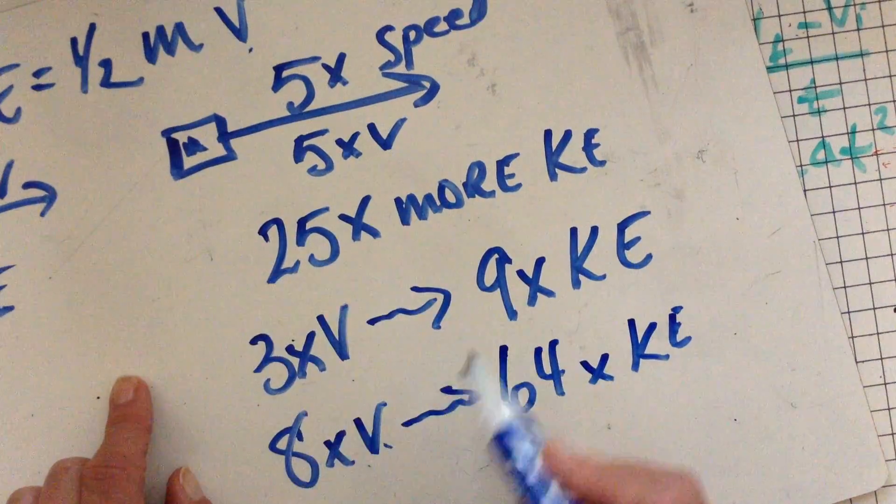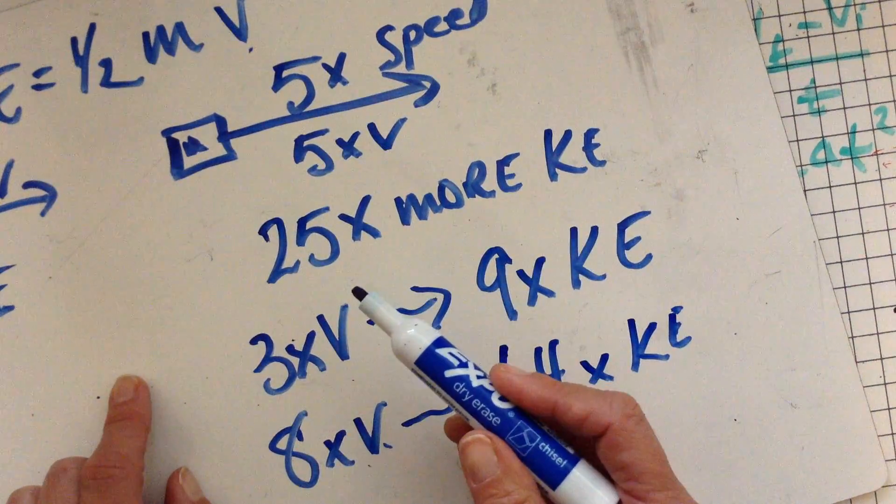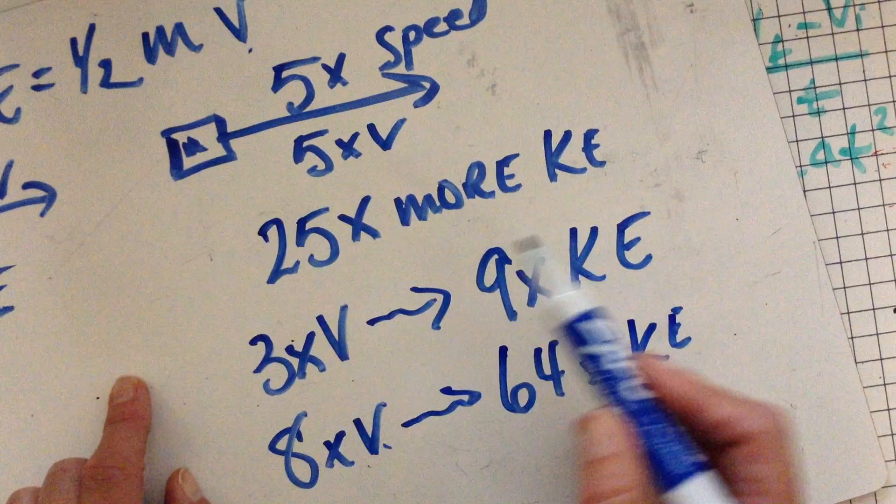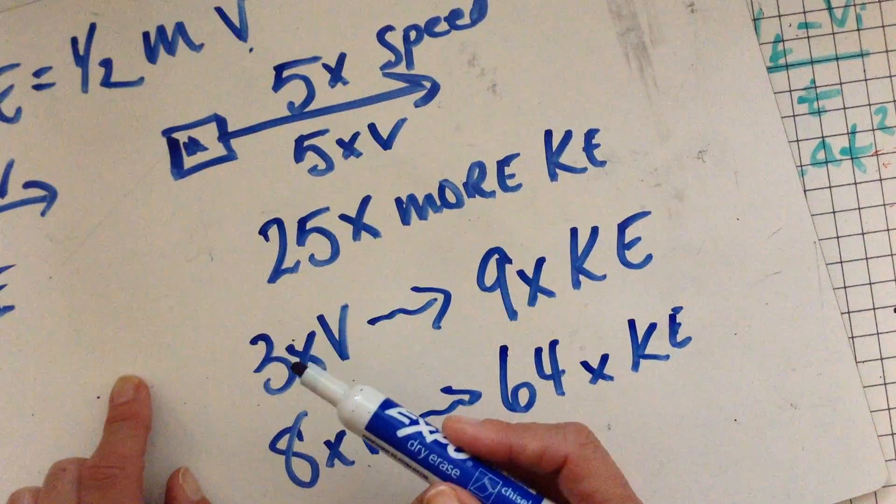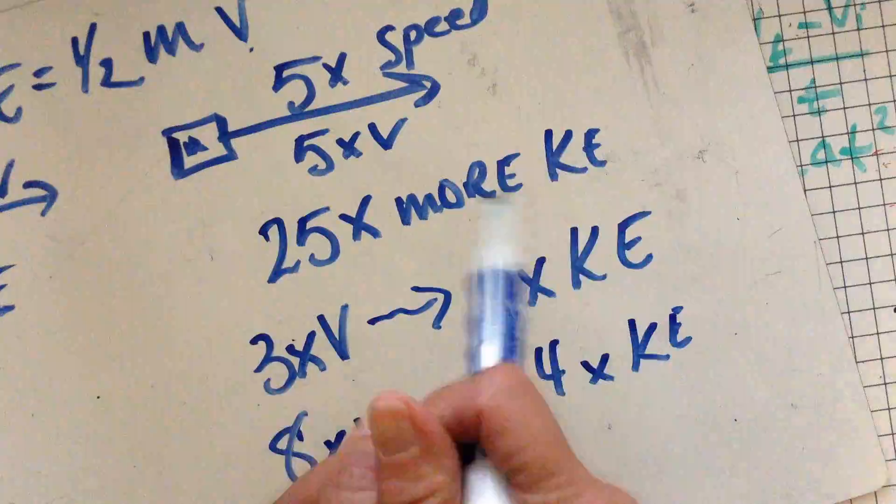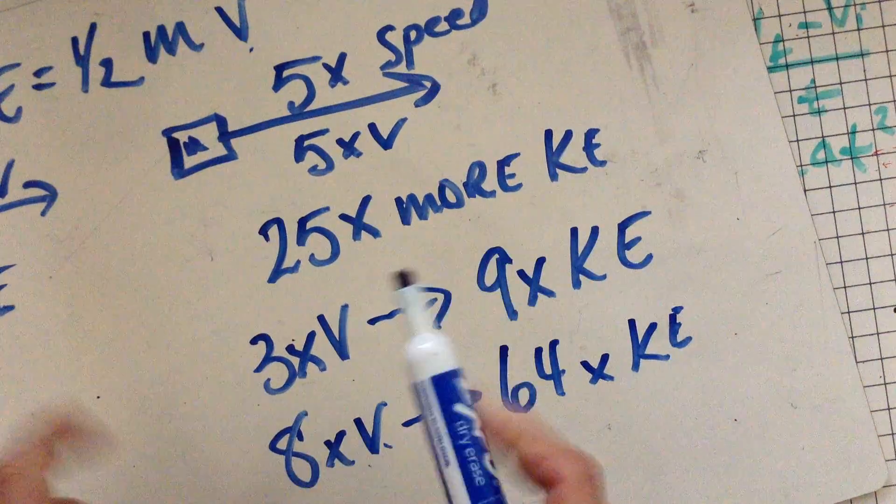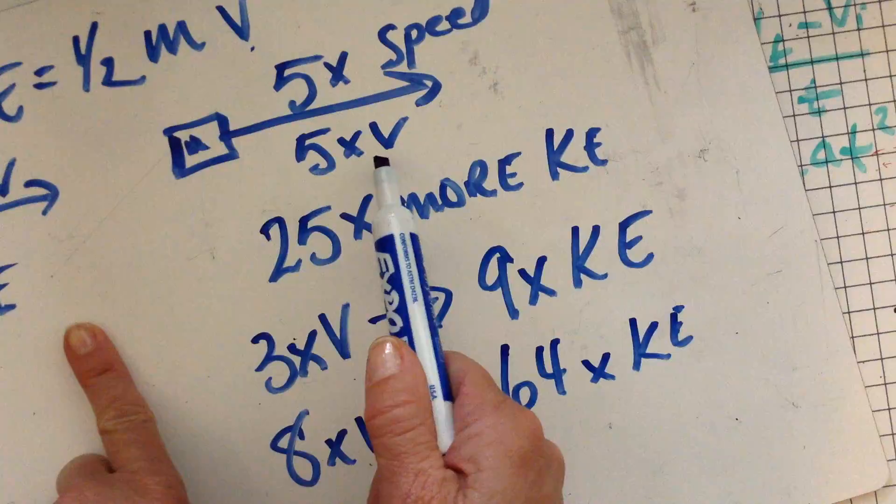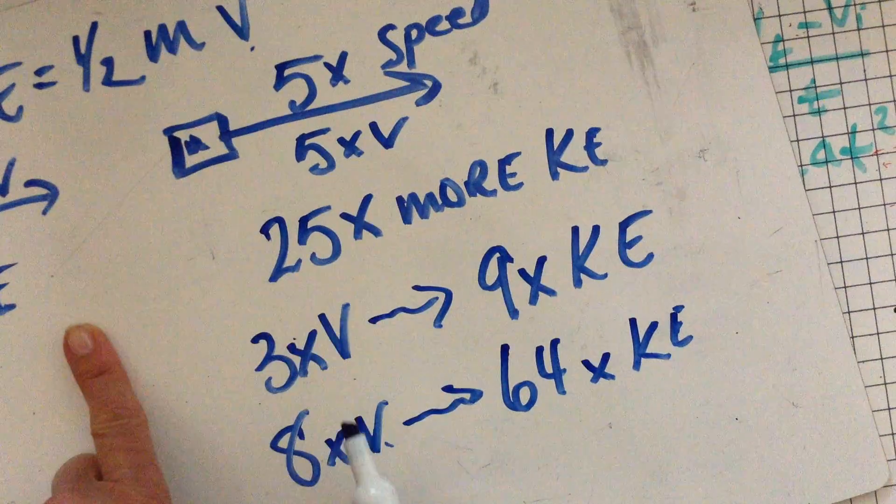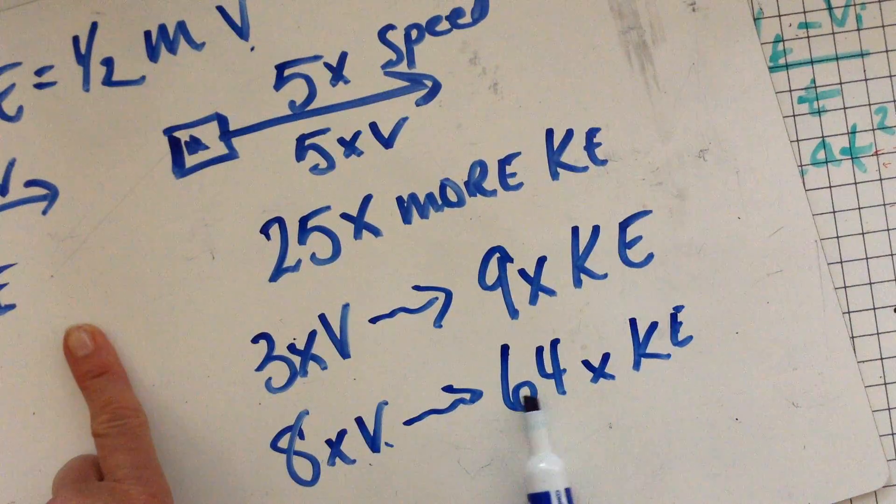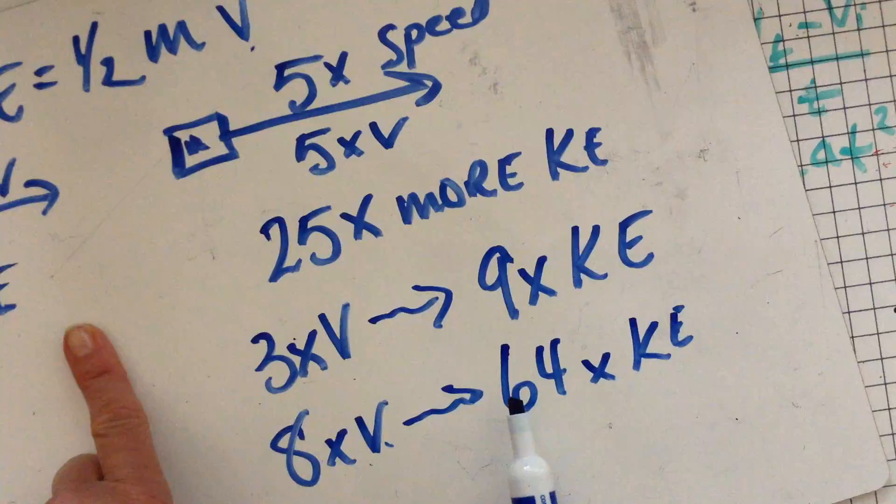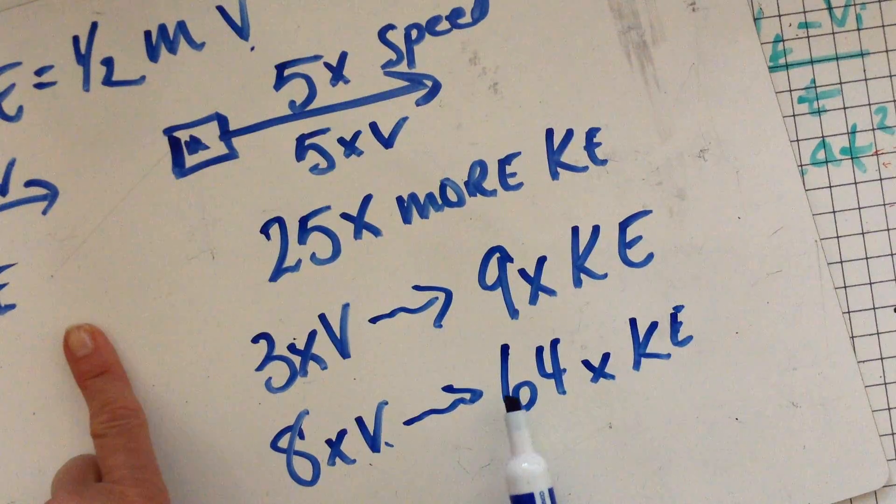And the problem with this is if you get into a crash, right, that energy has to go somewhere. And it goes into the crumpling and the destruction and the amount of force that it takes to make it stop. So the faster you go, it's not a linear relationship. It actually gets increasingly bad news. More energy means more destruction when you need to stop.